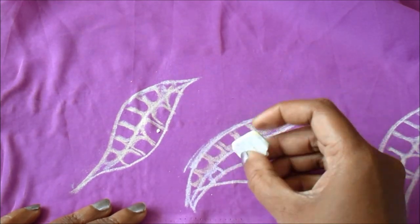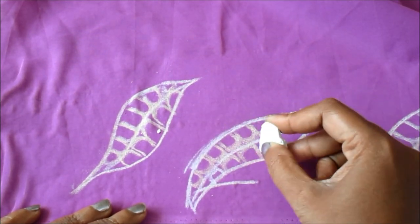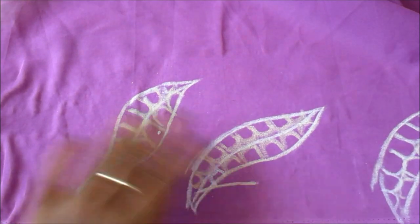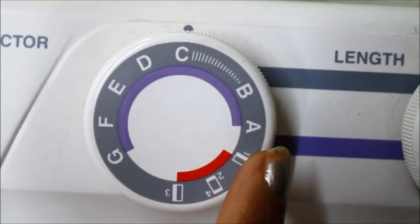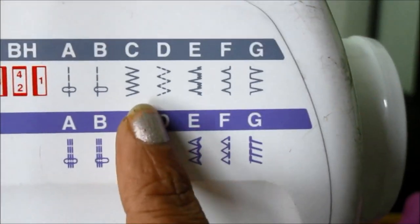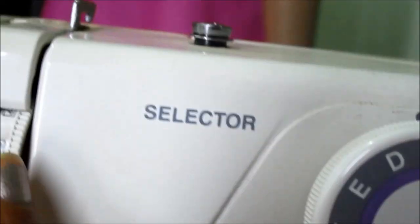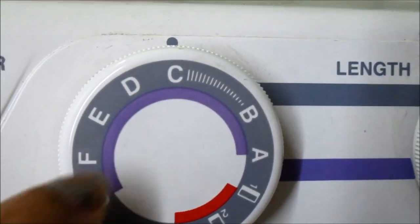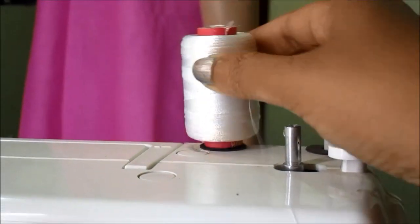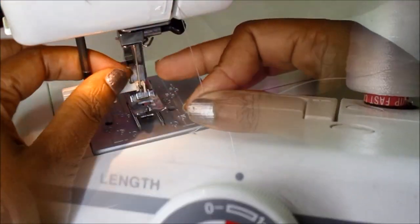I'm going to use machine work, so I'll be using Usha Vanda stitch. This is an automated sewing machine with the length of 0.5 inches, the stitch of zigzag, and the dial adjustment on three. This is how we have to select it, with the silk thread on the spool inserting in the needle.